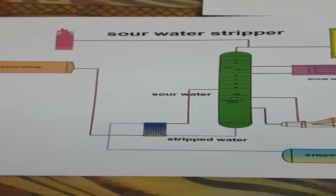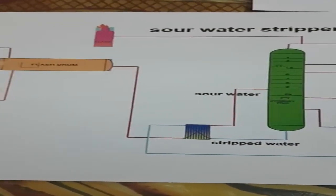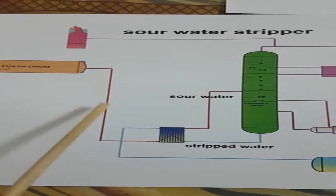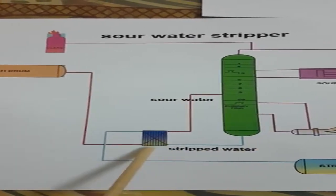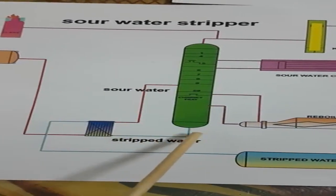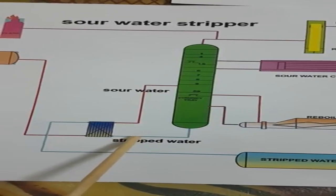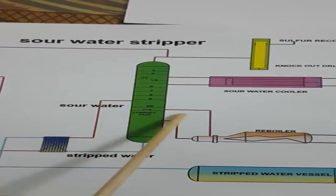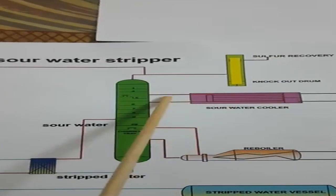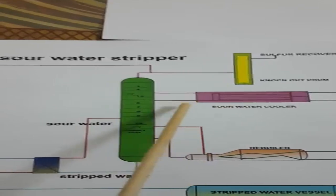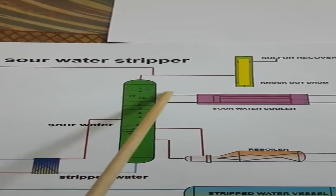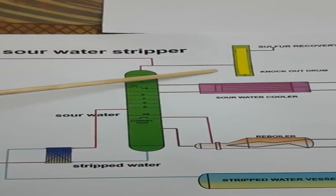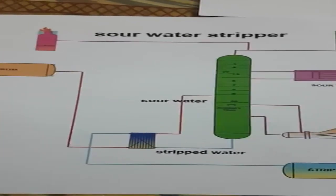For easier understanding, I have put a flow diagram without pumps. From the flash drum to the stripper, we use pumps to send liquid from one point to the next. From the distillation column, another pump transfers strip water to the strip water vessel. For the reboiler, no pump is required — it goes by siphoning. The sour water cooler also has a pump to transfer sour water, and after cooling it returns to the system. There is also a knockout drum.